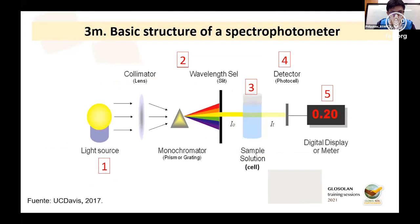The basic structure of a spectrophotometer is straightforward: there is a light source, a wavelength dispersive element, the sample solution through which light passes, a detector, and a digital display or meter. We measure the amount of light that passes through the solution, because the solution containing the complexes absorbs part of the light coming from the light source.